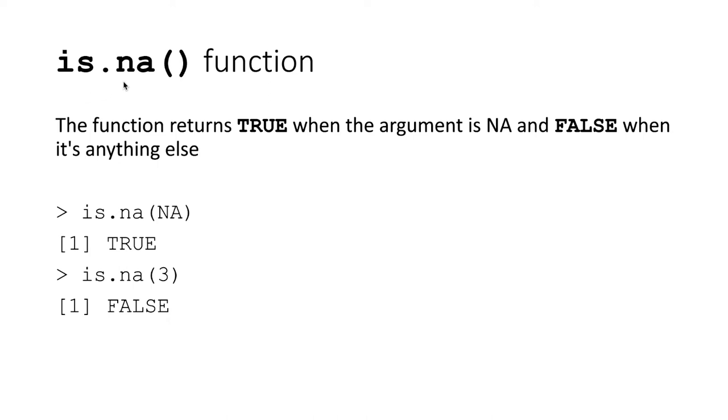This is a function called is.na. Is.na is a very simple function. You simply pass an object in, and if the object that you passed in is a NA, then it returns a value of true. If the value that you pass into the function is anything else, then the value is false. This seems like a somewhat useless function, but we'll see how it actually is very useful in our script.